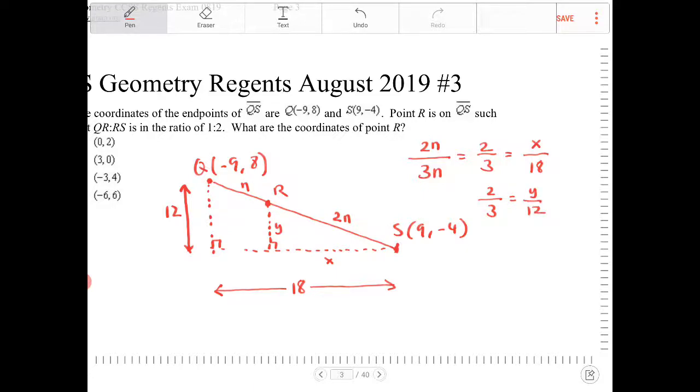And again, what is allowing me to set up these proportions here? It is the fact that I'm dealing with two similar triangles.